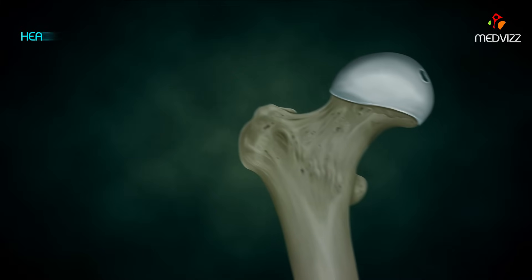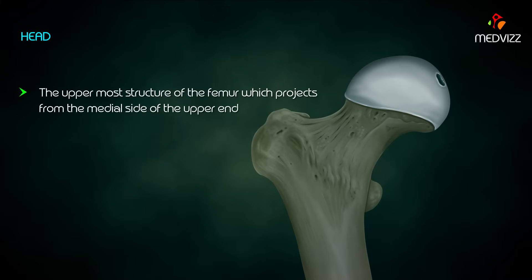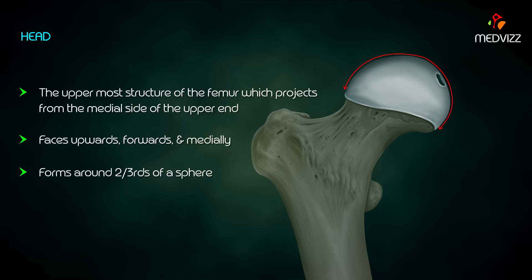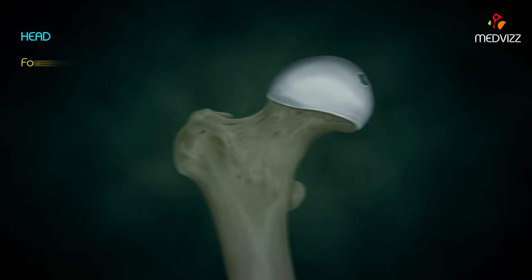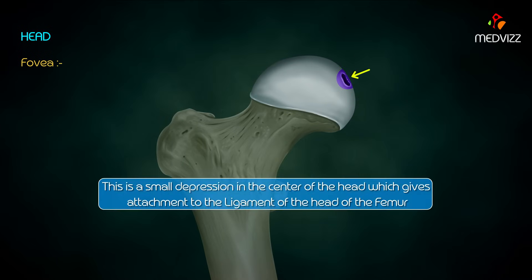The head is the uppermost structure of the femur, which projects from the medial side of the upper end. It faces upwards, forwards, and medially. It forms two-thirds of a sphere and articulates with the acetabular cavity of the hip bone to form the hip joint.